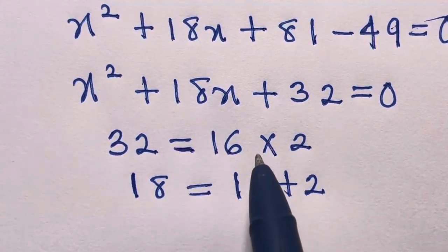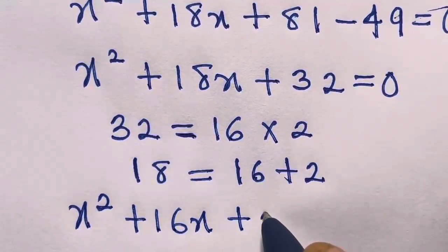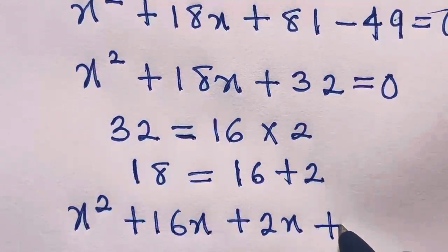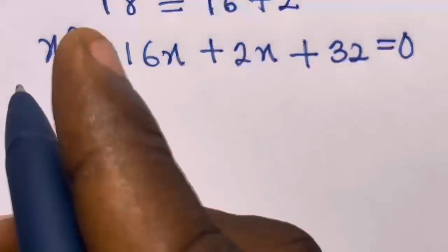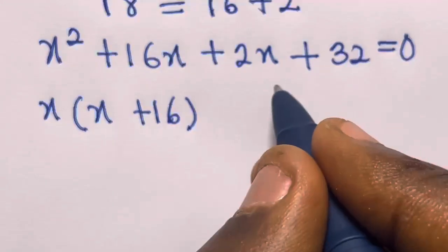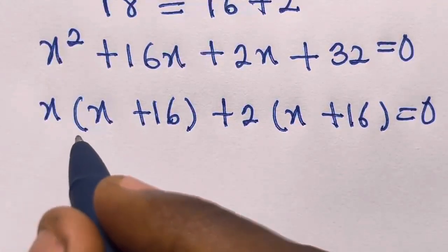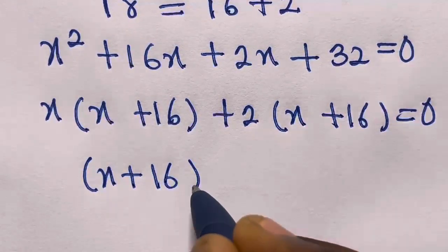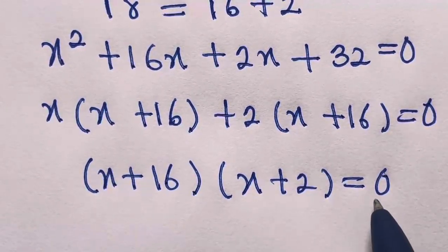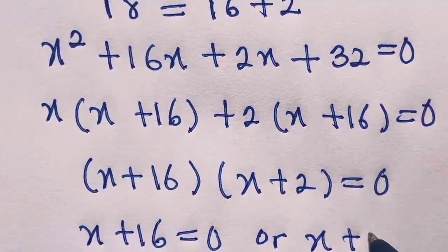So we replace 18x with these factors, giving us x squared plus 16x plus 2x plus 32 equals 0. If you add them, we get 18x, and if you multiply them, we get 32. Now we have a common factor: x from the first pair gives x times x plus 16, and 2 from the second pair gives 2 times x plus 16, so x plus 16 equals 0.